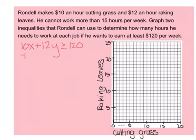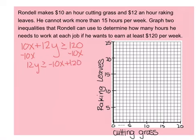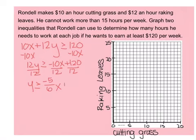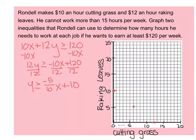I get paid $10 for every hour cutting grass plus $12 for every hour raking leaves, and I want to earn at least $120, so: 10x + 12y ≥ 120. Solving for y, I subtract 10x to get 12y ≥ −10x + 120, then divide by 12. Reducing the fraction — 2 goes into both 10 and 12 — I get y ≥ −5/6 x + 10. I start at 10 and go down 5 over 6. It's a solid line, and greater than tells me to shade above.